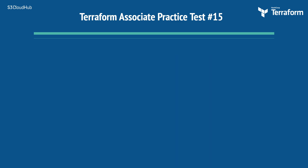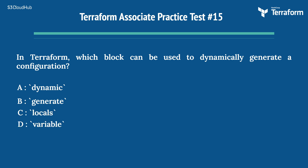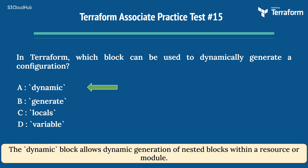The fifteenth question is: which block can be used to dynamically generate a configuration in Terraform? Option A: dynamic. Option B: generate. Option C: locals. Option D: variable. The right answer is Option A: dynamic. The dynamic block allows dynamic generation of nested blocks within a resource or module.